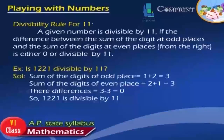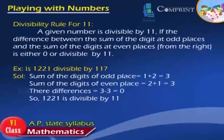Divisibility Rule for 11: A given number is divisible by 11 if the difference between the sum of digits at odd places and the sum of digits at even places is either 0 or divisible by 11. Example: Is 1221 divisible by 11? Sum of digits at odd places = 1+2 = 3; sum of digits at even places = 2+1 = 3. Difference = 3−3 = 0. So, 1221 is divisible by 11.